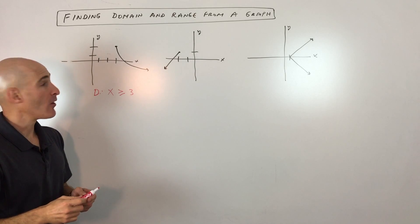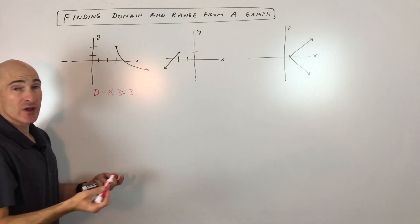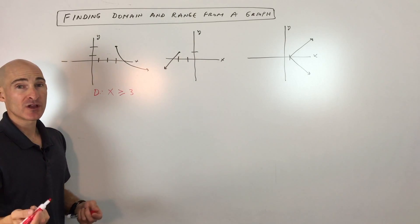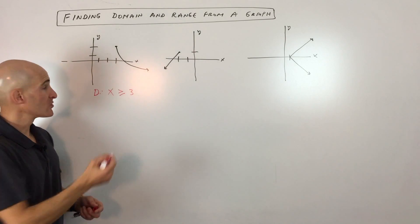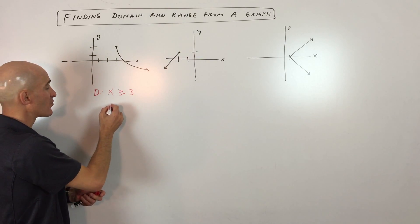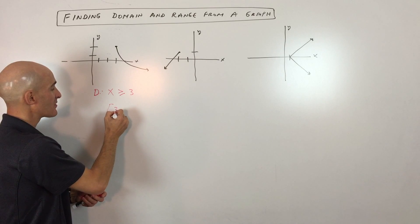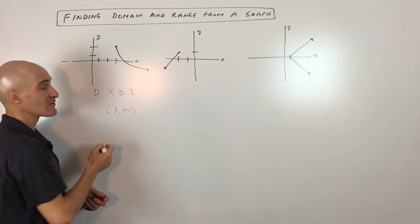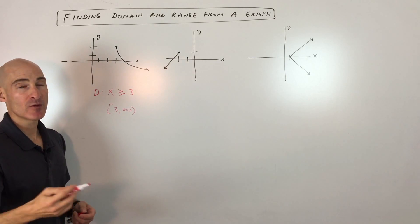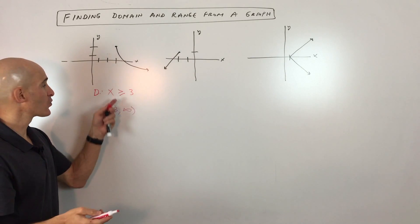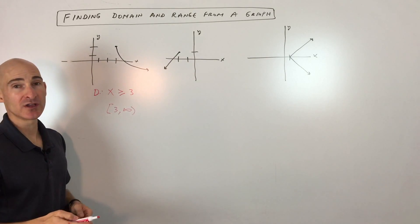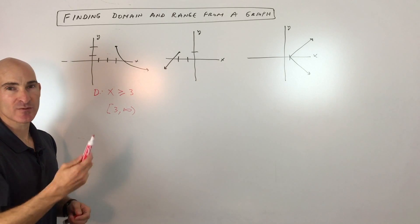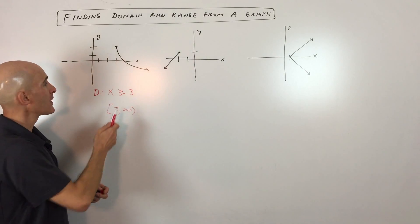So the domain is x ≥ 3. Another way to write this using interval notation is from three to positive infinity. At this stage you're probably working with inequality notation, but I'll show you both.